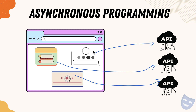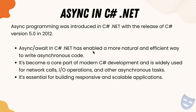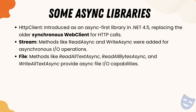Asynchronous programming was introduced in C# in version 5.0 in 2012, and since then it has gained quite a lot of popularity. Many companies, toolings, and libraries are all using asynchronous programming code. The async/await keywords in C# have enabled a more natural and efficient way to write asynchronous code. It has become a core part of modern C# development and is widely used for network calls, I/O operations, and other asynchronous tasks. This popularity led many popular C#.NET libraries to move toward asynchronous programming.